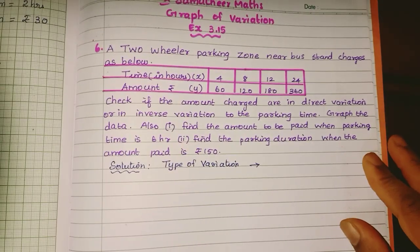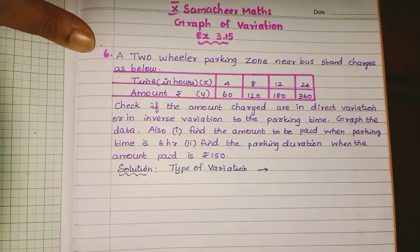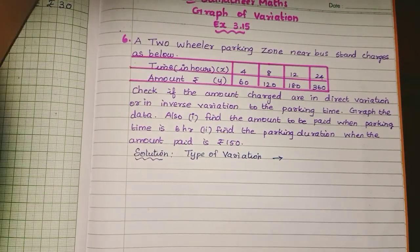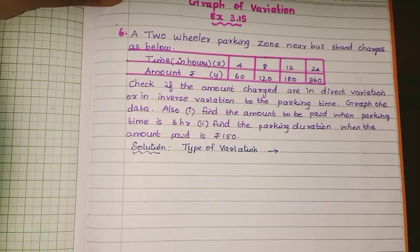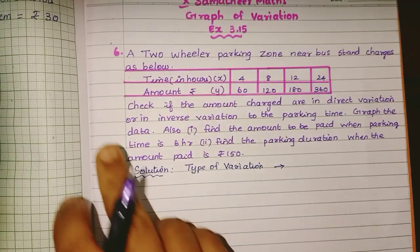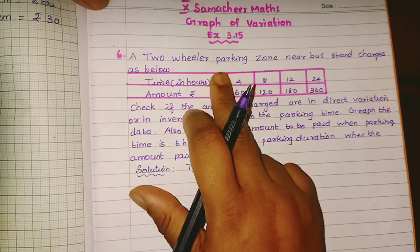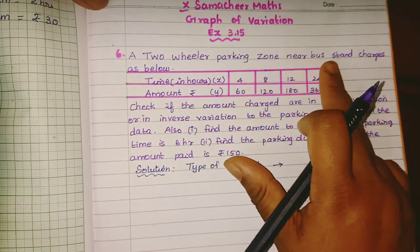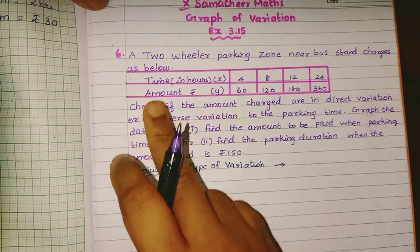Students, in the 10th standard year, graph of variation chapter, exercise 3.15, sixth question. A two-way parking zone near a bus stand charges as below.